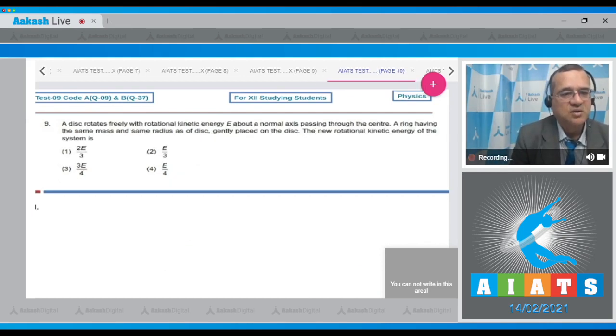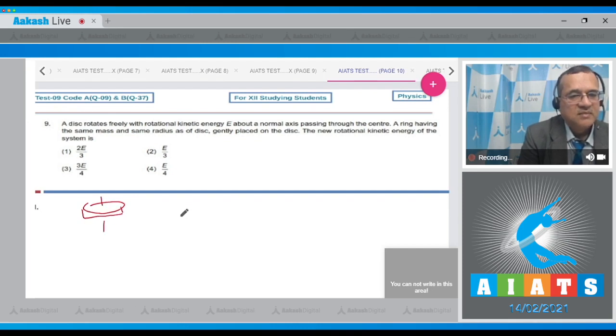Question number 9 is a disk rotates freely with rotational kinetic energy E about a normal axis passing through the center. A ring having the same mass and same radius as the disk is gently placed on the disk. The new rotational kinetic energy of the system would be. Now dear students, a disk was rotating like this and the energy of the disk equals 1/2 I omega², where I equals mr²/2. This is one equation.